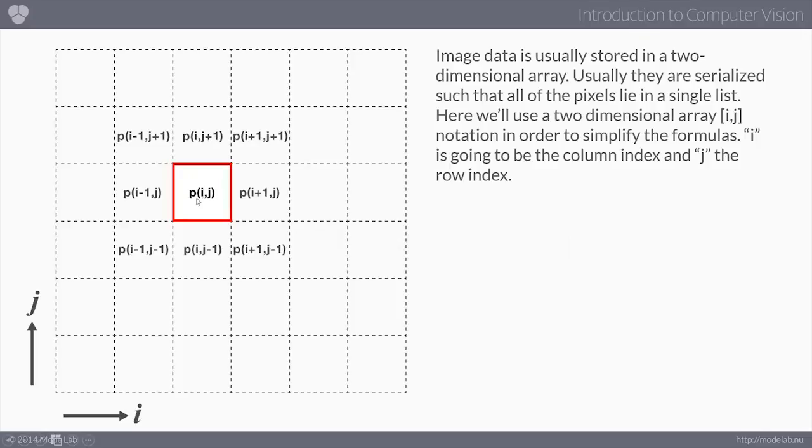And if we know any particular pixel, we can also find any of its neighbors. The pixel to the right of the current pixel is always I plus one, J, and the one to the left is always I minus one, J. Similarly, the pixel adjacent to the top is I, J plus one.